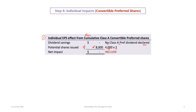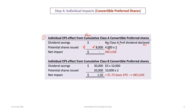For the Class B cumulative convertible preferred shares: a dividend does not need to be declared — it's irrelevant whether it was declared. We have 10,000 Class B convertible preferred shares paying a $3 dividend. For the individual impact, we consider current year only — dividends in arrears are irrelevant. Each preferred share is convertible into two common shares, resulting in an additional 20,000 shares. The earnings impact is $30,000 (10,000 shares times $3), and the per-share individual impact is $30,000 divided by 20,000, which equals $1.50.